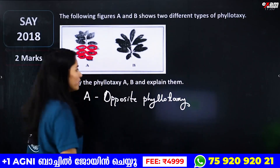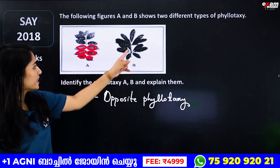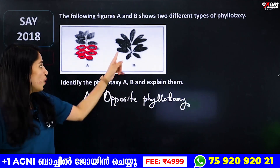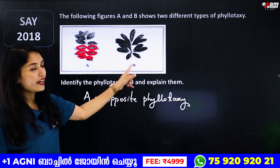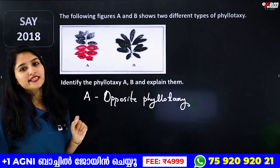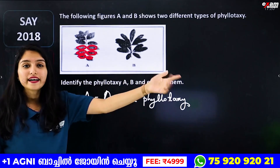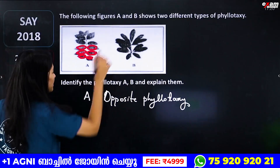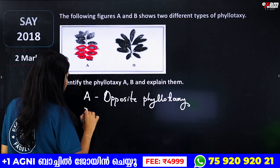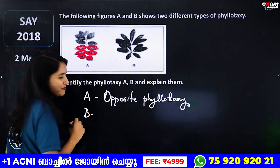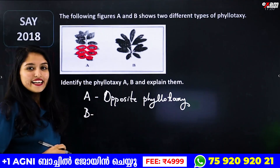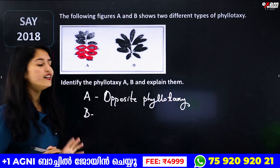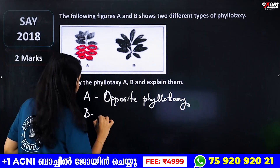Opposite phyllotaxy — if you want to take a look at that, you will see more than two leaves arise from a node. B is the opposite or alternate. That is the whorled phyllotaxy.